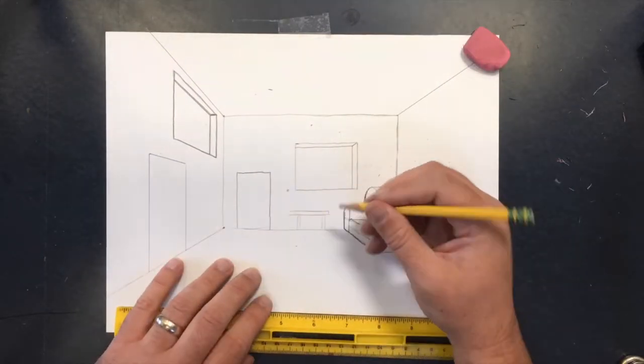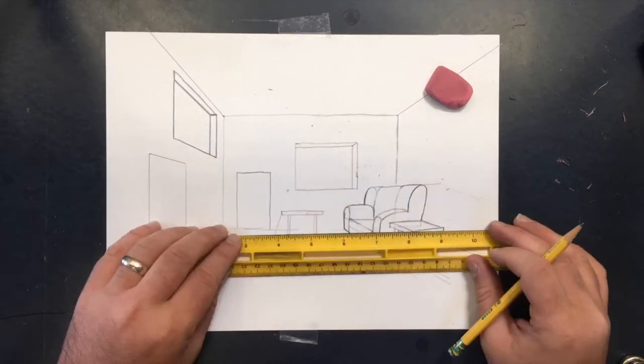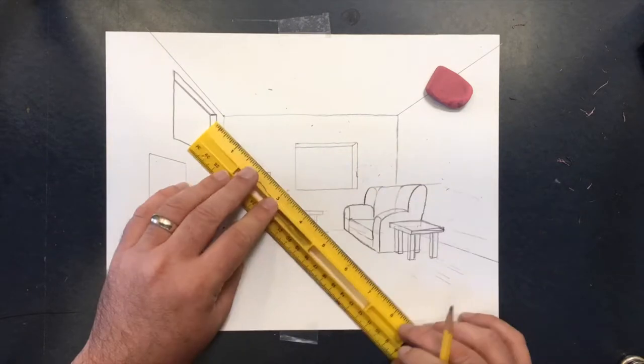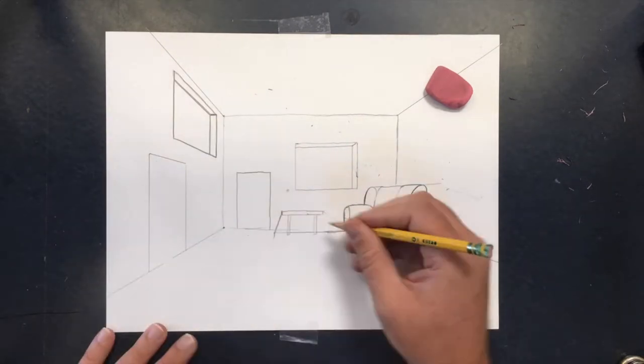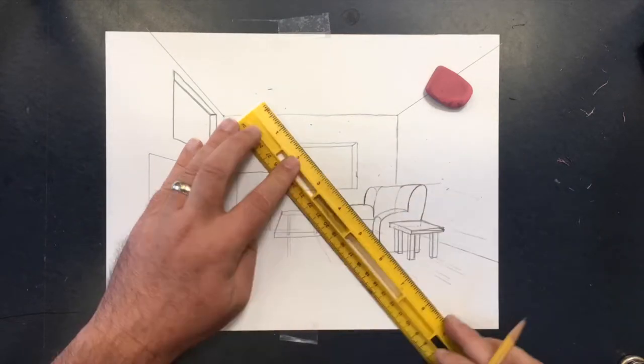Here I'm going to use that same technique with a coffee table, and I want you to notice how much erasing I'm doing. Erasing is normal. You will have to erase a lot to draw this way, so be sure that you aren't pushing hard when you draw so that it's very easy for you to erase.